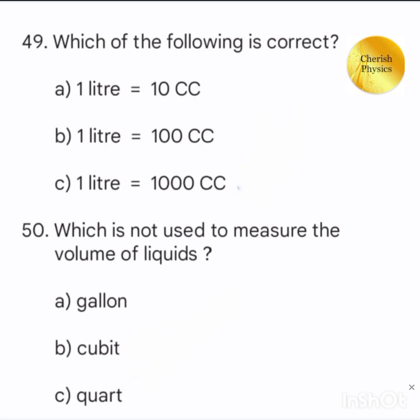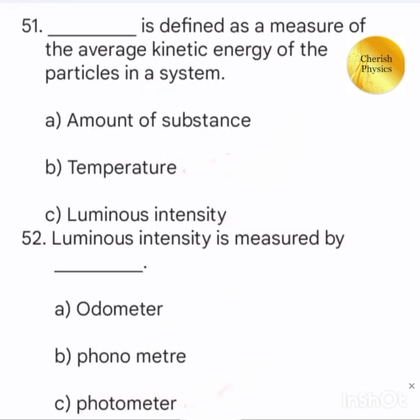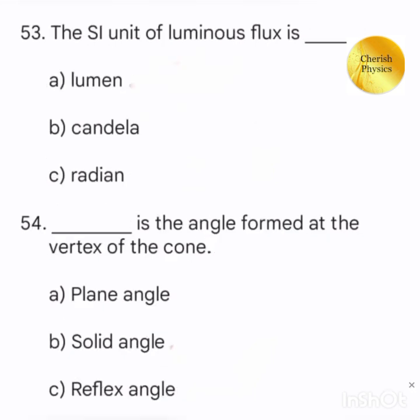Which of the following is not used to measure the volume of liquids? Dash is defined as a measure of the average kinetic energy of the particles in a system. Luminous intensity is measured by. The SI unit of luminous flux is.